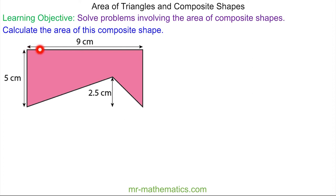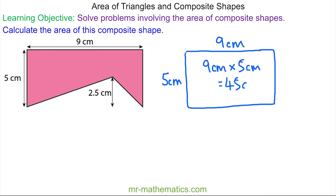To begin, I'm going to work out the area of this rectangle which is 9 by 5. This gives us an area of 9 centimeters times 5 centimeters, which is 45 centimeters squared.